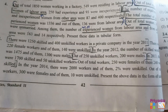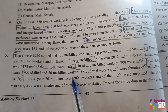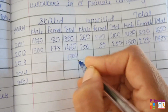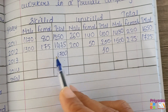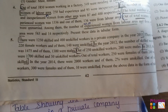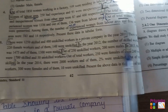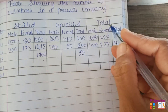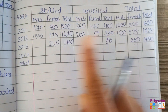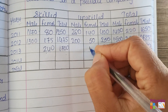Moving to the next information. In 2013, there were 1700 skilled and 50 unskilled workers. So the total will be 1700 plus 50, which equals 1750 workers. Out of total workers, 250 were female, and of them, 240 were skilled. We write down that 250 were females, out of which 240 were skilled. The total minus skilled gives unskilled females — that is 250 minus 240, giving a difference of 10.